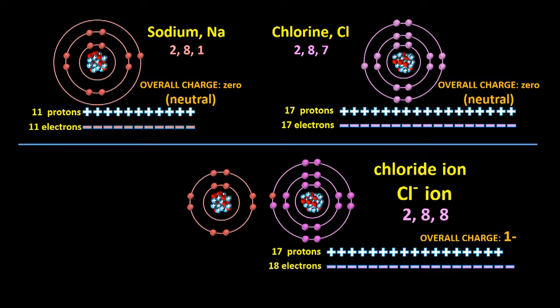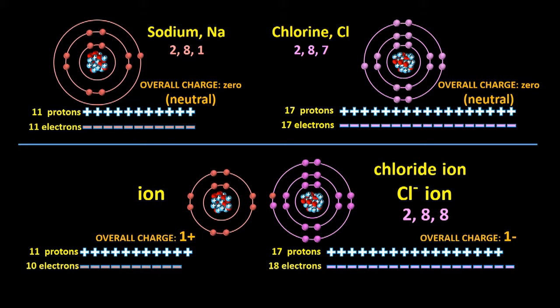The Na atom, on the other hand, has 11 positively charged protons, but now has only 10 negatively charged electrons, so we say that it now has an overall charge of 1 plus. It also has become an ion, but a positively charged ion. We call the ion an Na plus ion, or a sodium ion. Metal atoms don't get a name change when they turn into ions. Its electron configuration is now 2,8.